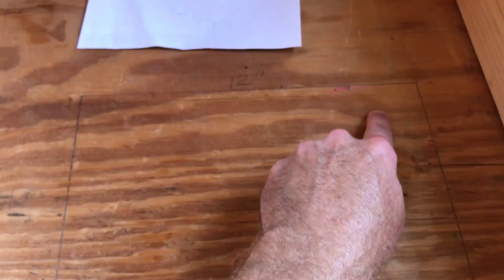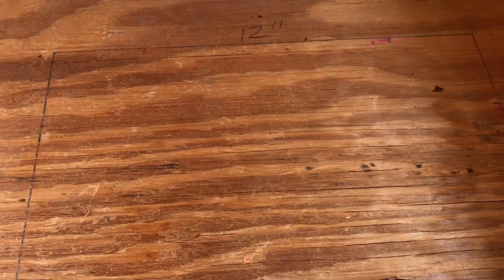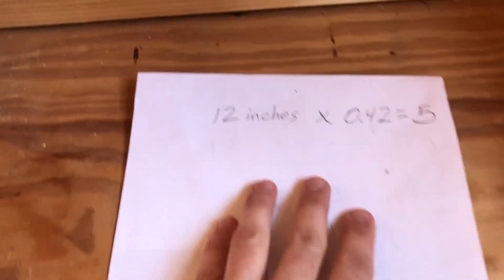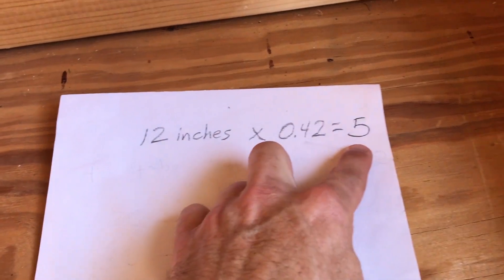For this example, I drew a square — 12 inches on each side. So you need to remember: if you want to turn any square into an octagon, the length of the side of the octagon is 0.42 times the length of the side of the square. For example, 12 inches multiplied by 0.42 gives us 5.